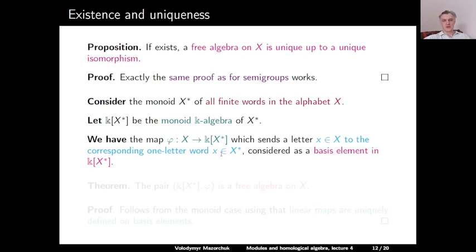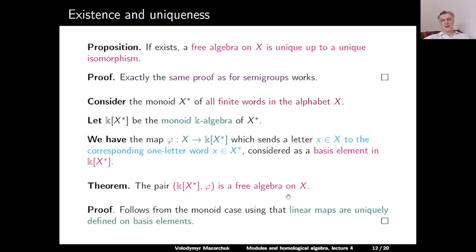Now an explicit construction of free algebras: consider the monoid X* of all finite words in the alphabet X. Consider the monoid k-algebra of this monoid. We have the map φ from X to this monoid k-algebra, which sends a letter x to the corresponding one-letter word considered as a basis element. Theorem: the pair consisting of the monoid algebra of the free monoid on X and our map φ is a free algebra on X. The proof is the same as in the semigroup case, using that a k-linear map is determined by its values on basis elements, extended by k-linearity.